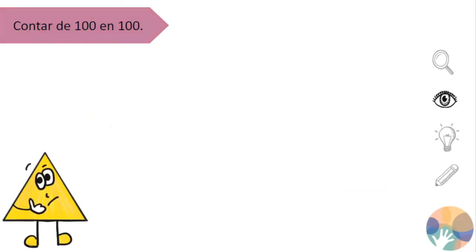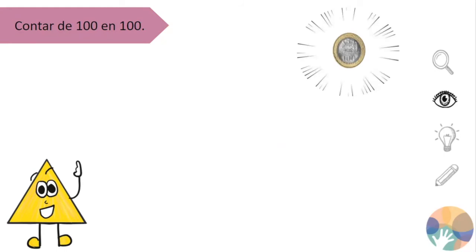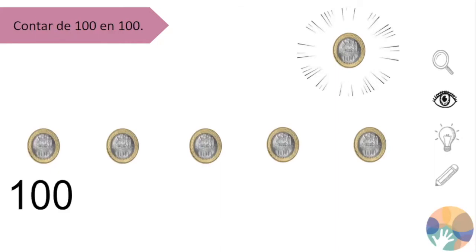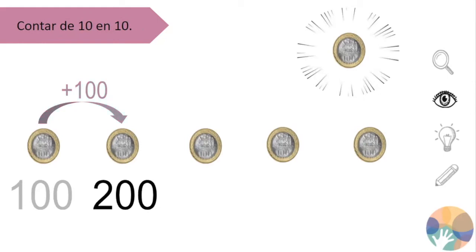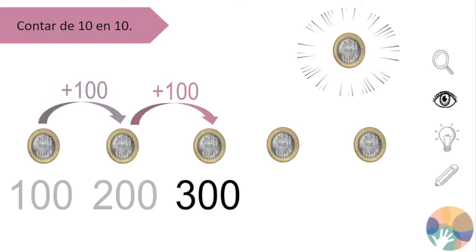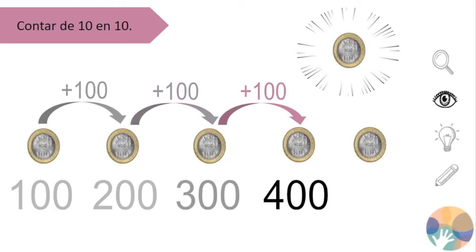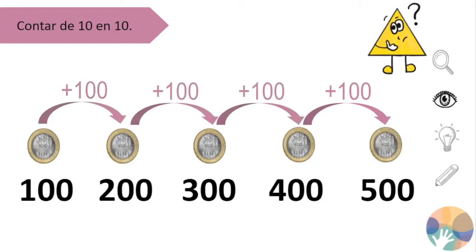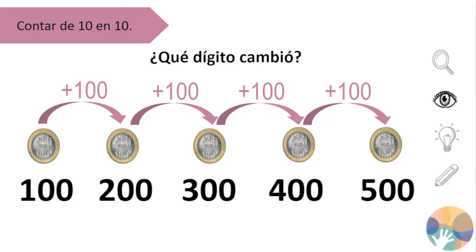Contar de 100 en 100. ¿Con qué monedas podemos relacionar el conteo de 100 en 100? Con la moneda de 100 pesos. Contemos de 100 en 100: partimos con 100 pesos, le agregamos 100 más y nos quedan 200 pesos; seguimos con 200, le agregamos 100 más y obtenemos 300 pesos; seguimos con 300, le agregamos 100 más y nos quedan 400 pesos; seguimos con 400, le agregamos 100 pesos más y finalmente obtenemos 500 pesos. Mientras contábamos de 100 en 100, ¿qué dígito cambió? El dígito que se ubica en las centenas.